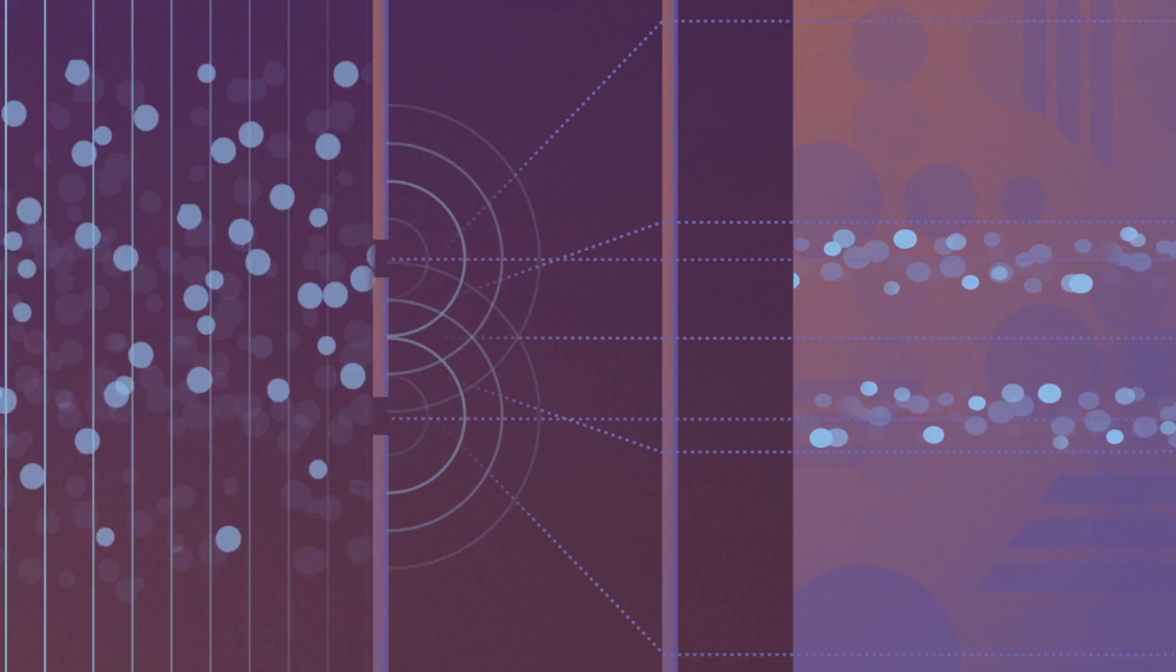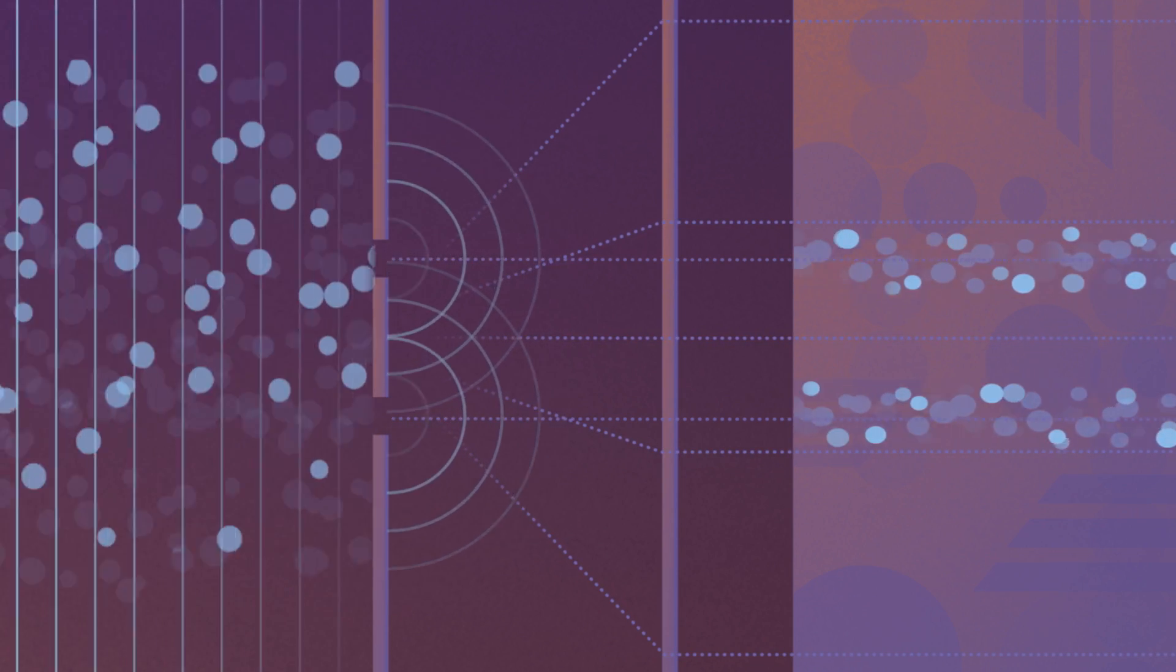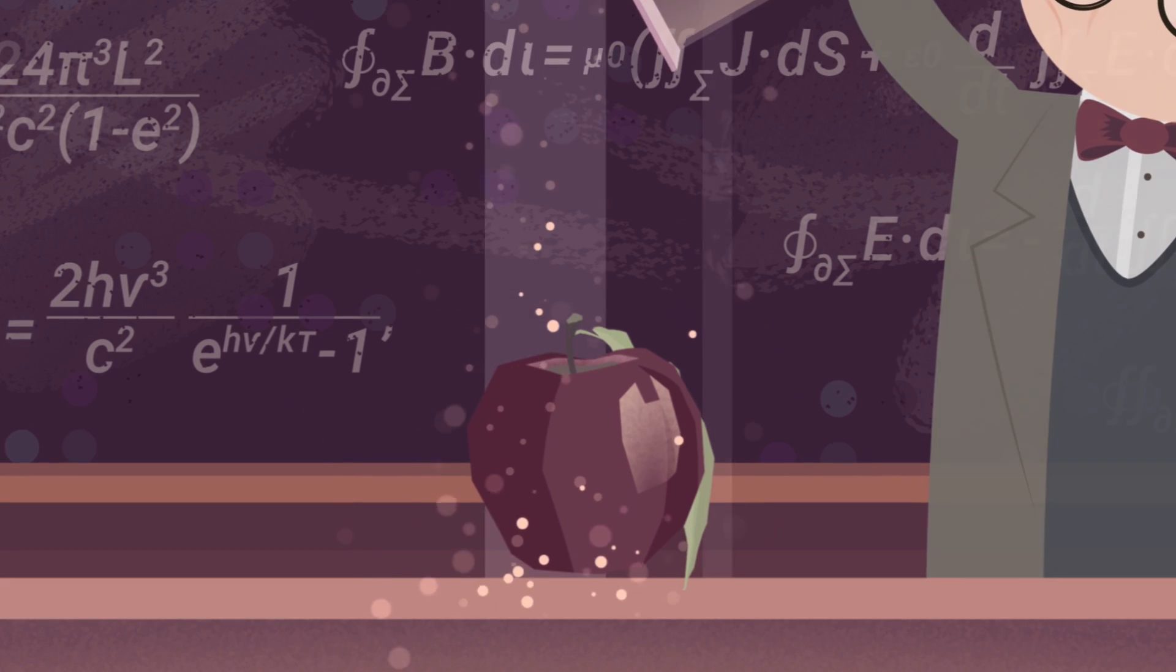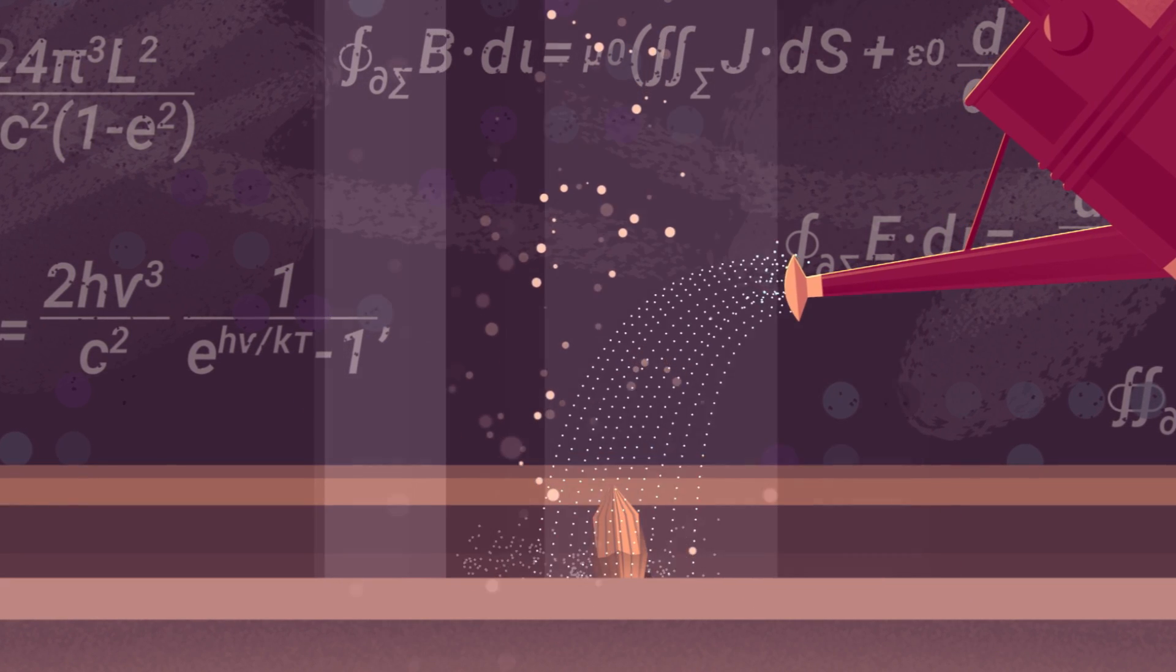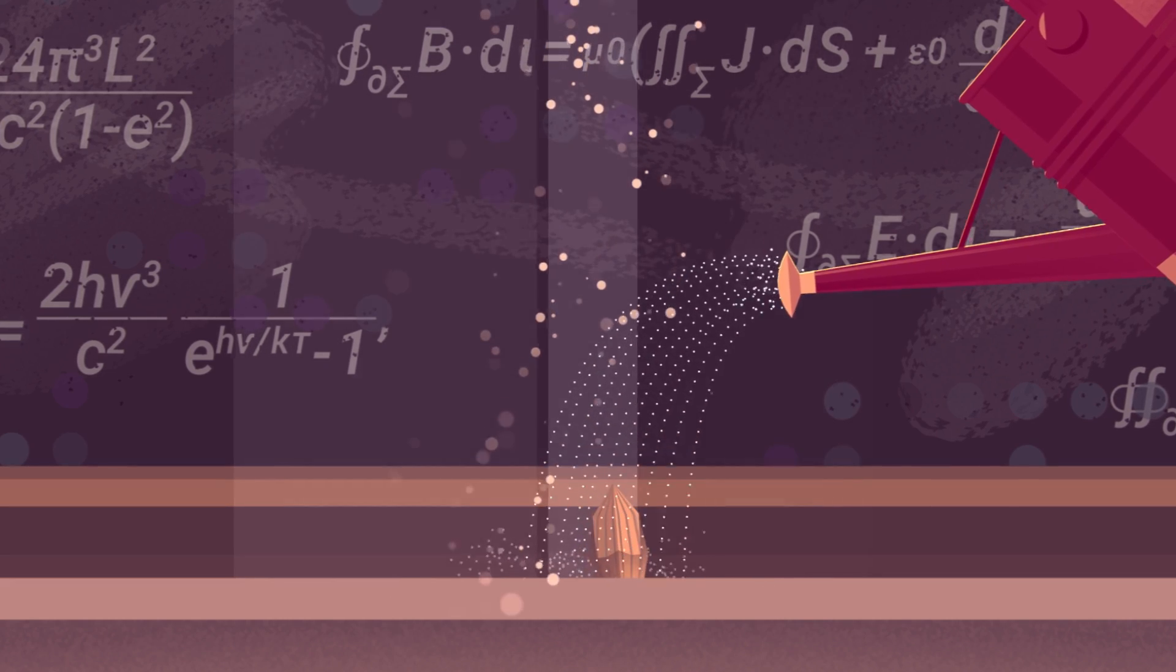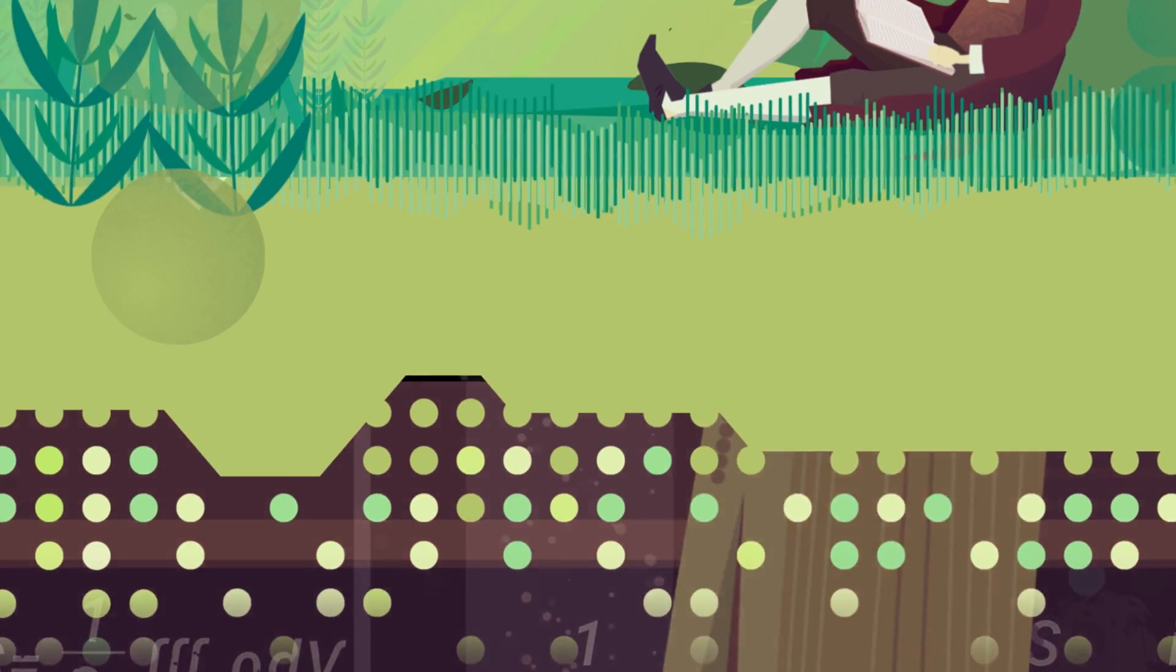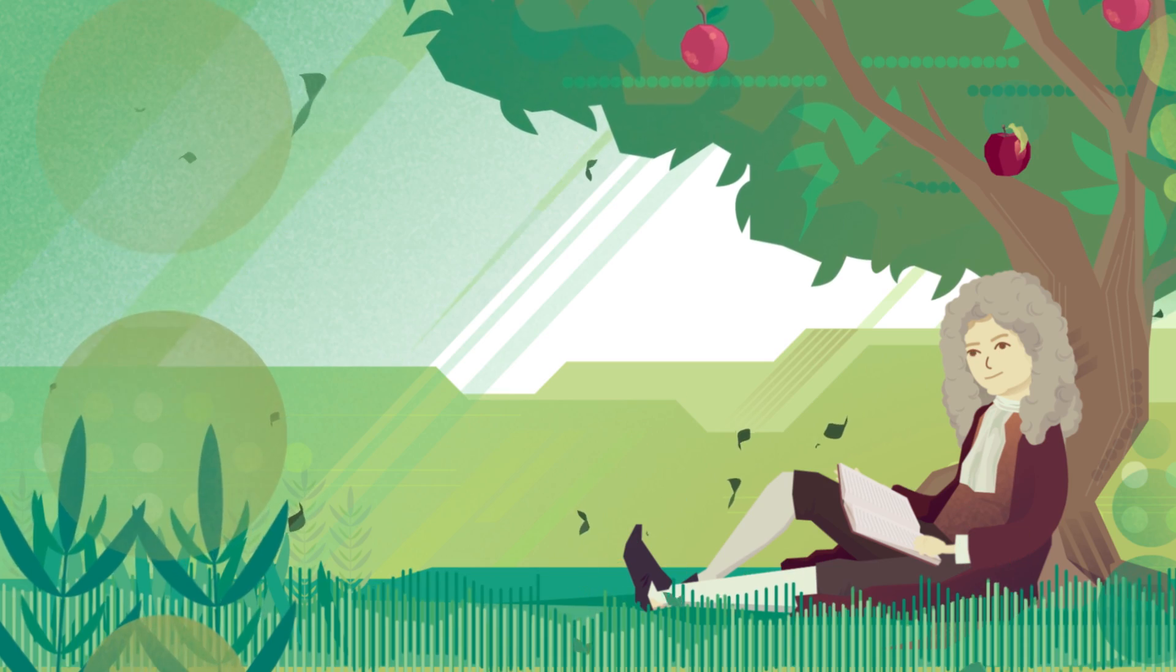So in some sense, you can think of the Schrodinger equation as the parent of Newton's laws. But it is the more fundamental equation, which once you zoom out, reproduces Newton's laws.